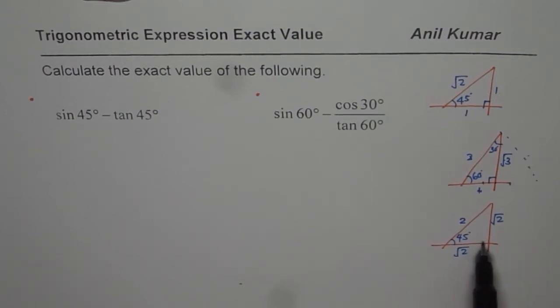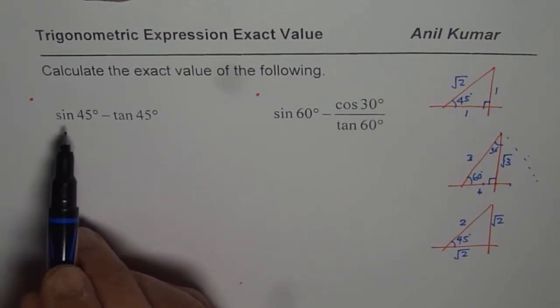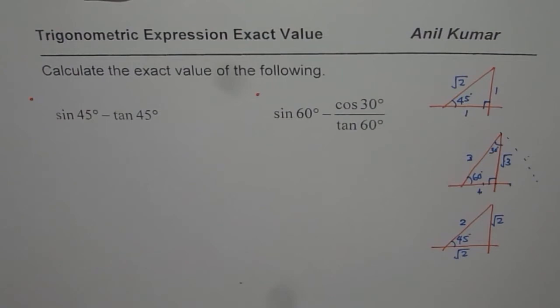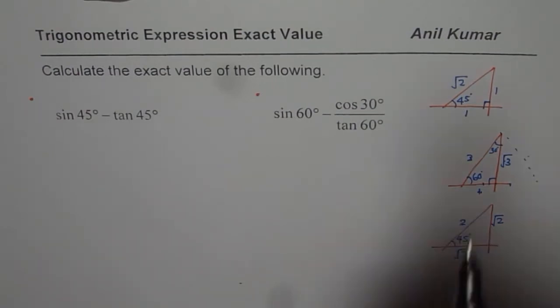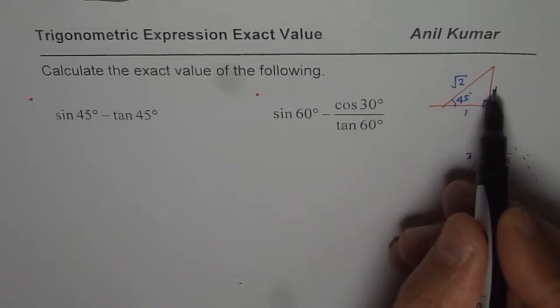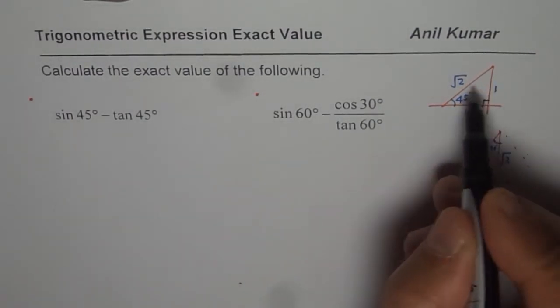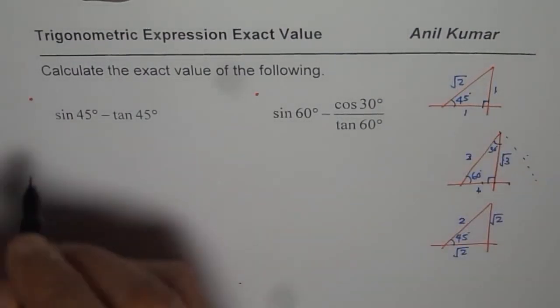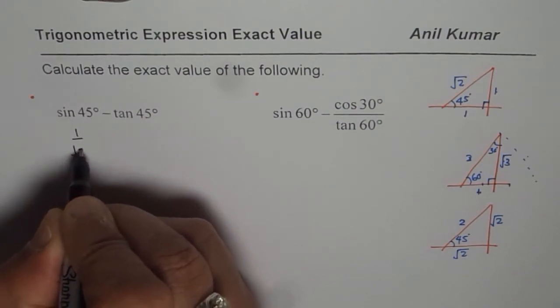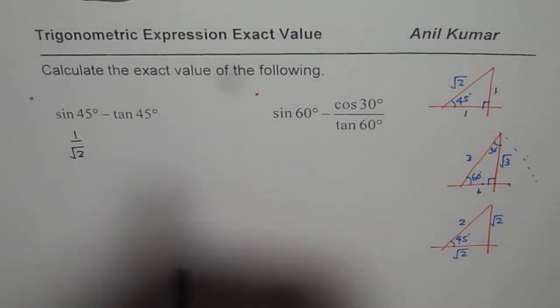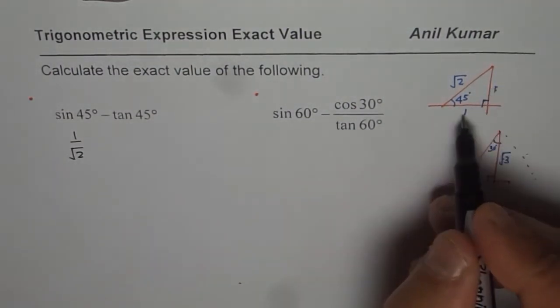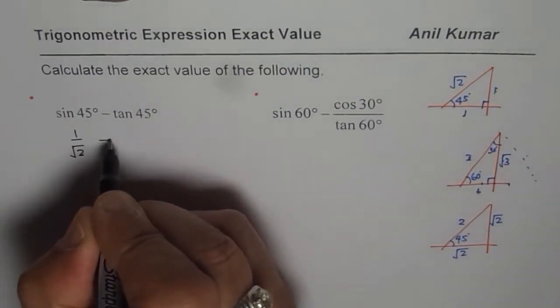There is an advantage of this triangle which we will figure out when we solve the question. Okay. Let us begin with the very first one. It says sine 45 degrees minus tan 45 degrees. So we will use that 45 degrees triangle. Sine 45 is opposite over hypotenuse. If I use this triangle, I get 1 over square root 2. And tan 45 degrees is opposite over adjacent which is 1. So minus 1.